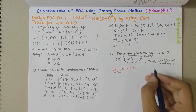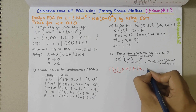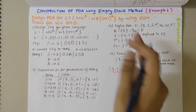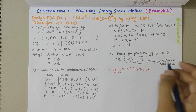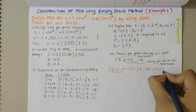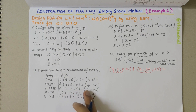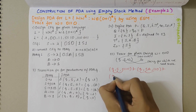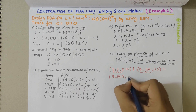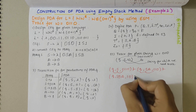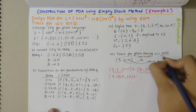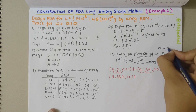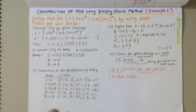Continuing the trace: delta(Q, 1, S) = (Q, S·B), so in place of S I put S·B, and 1 is consumed, leaving 10. The stack is now S·B·A. Then delta(Q, lambda, S) = (Q, lambda), so S is removed. Now I process delta(Q, 1, B): B and 1 are consumed giving lambda, leaving stack A and string 0.